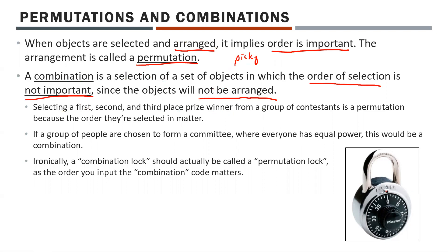A combination is where you're basically picking some things and grouping them together — the order doesn't matter. Selecting first, second, and third place prize winners from a group of contestants is a permutation because the order they're selected in actually matters. But if a group of people are chosen to form a committee where everyone has equal power, that would be a combination because order doesn't matter.